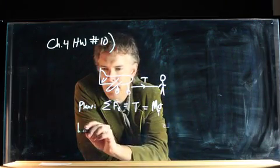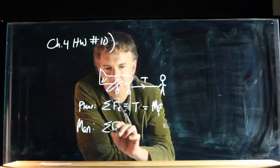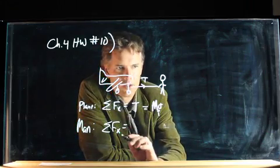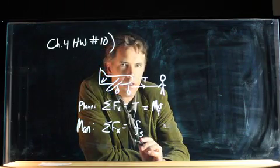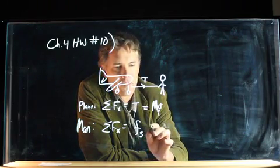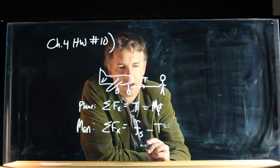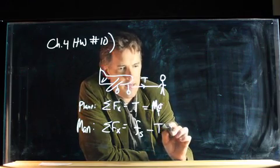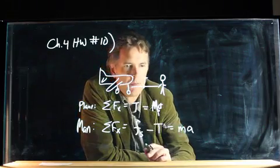What about the forces on the man? Well, we've got the sum of the forces in the x direction, which is equal to the friction that the person can apply, minus the tension in the cord. And that is equal to the mass of the man times the acceleration.